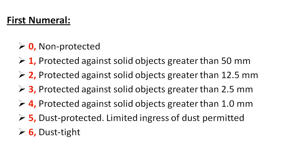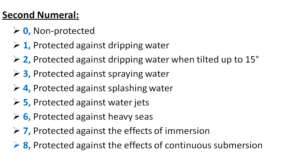Five indicates dust protected — a limited ingress of dust is permitted without having any effect on the operation of the equipment. Six indicates dust tight — no ingress of dust is permitted. That covers all values for the first numeral, which indicates protection against solid foreign objects.